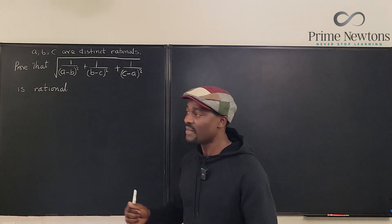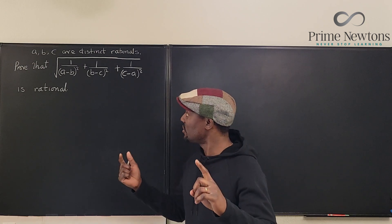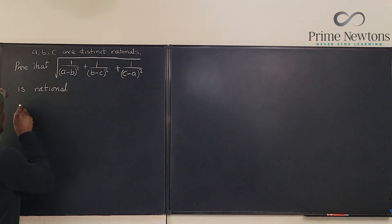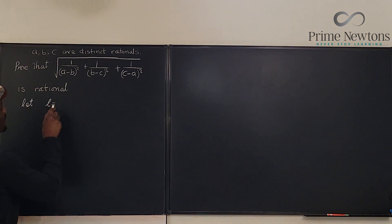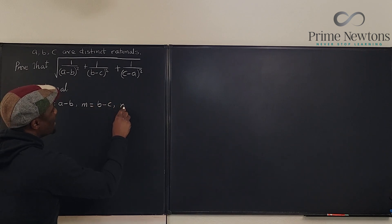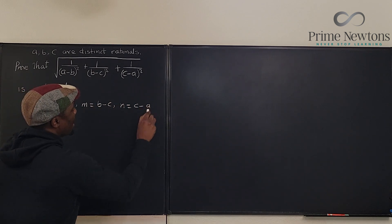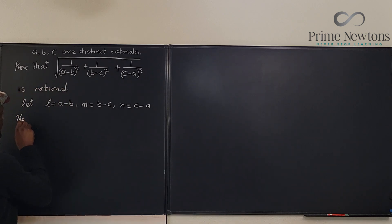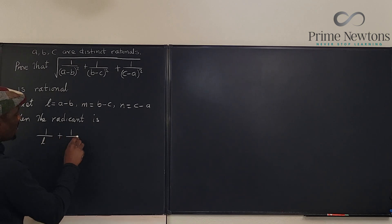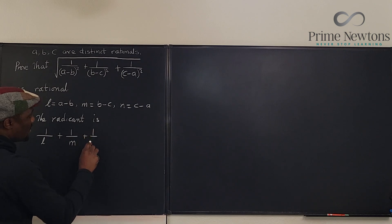In order to avoid writing A minus B, B minus C all the time, I'm just going to replace each of them with a single letter so it looks nicer. Let L be equal to A minus B, let M be equal to B minus C, and let N be equal to C minus A. So the radicand is 1 over L squared plus 1 over M squared plus 1 over N squared.